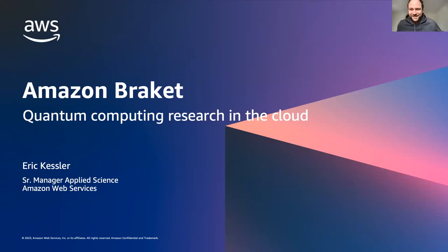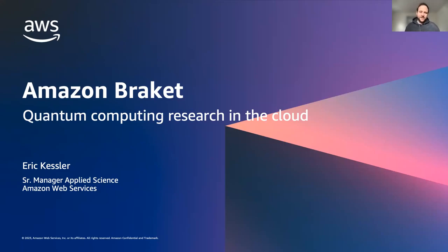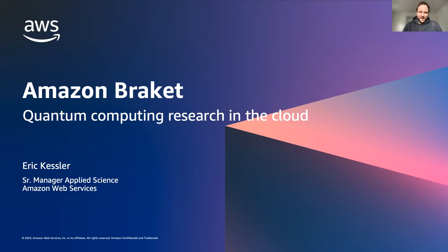Thank you for the kind introduction. I did my PhD in Munich with Ignacio Cirac, then had a postdoc with Michael Lukin in the US. I left the field to work in machine learning, first at IBM and then at AWS, where I ran our specialty practice for AI/ML on the East coast. I then joined the AWS quantum computing effort pretty much on the ground floor as one of the first hires. Right now I am the manager for the applied science team in Amazon Braket.